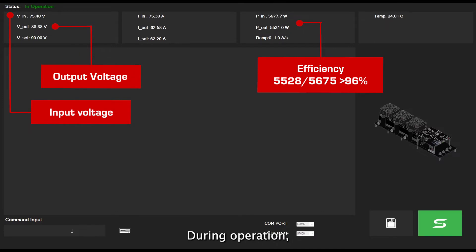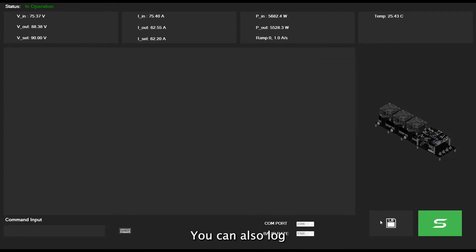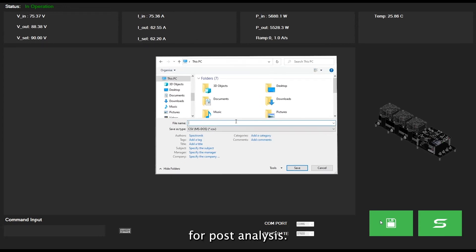During operation, all parameters of the Cerebro 55, such as voltage, current and power at both the input and output sides, can be monitored live on the GUI. You can also log these values to a CSV file for post-analysis.